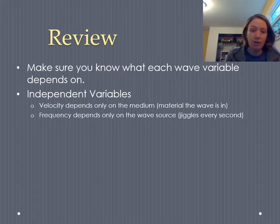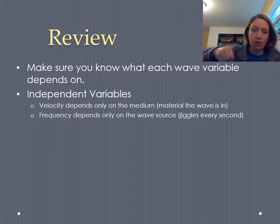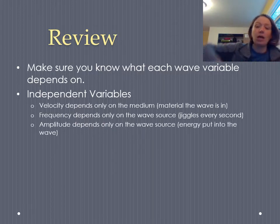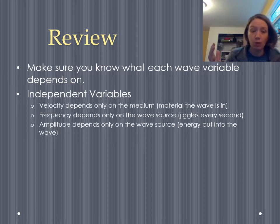The frequency of the wave is going to depend on the wave source. So the person creating the wave, how many jiggles they put in every second, is the only thing that the frequency is going to depend on. The amplitude also depends on the wave source. It depends on how much energy the wave source decides to put into the wave. So those are the independent variables because they are based on the physical setup of the scenario.